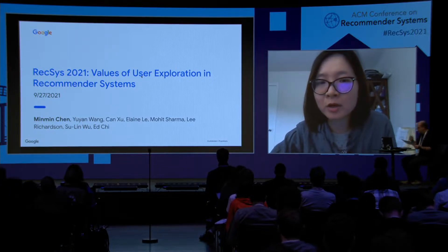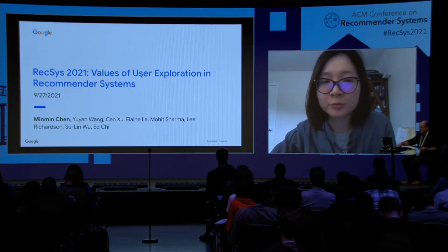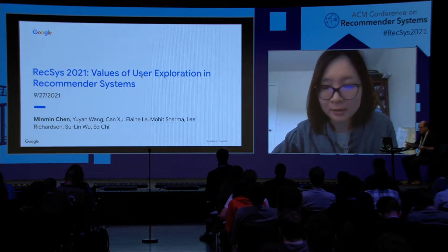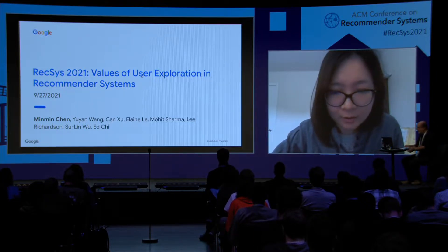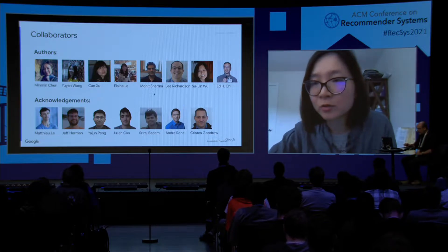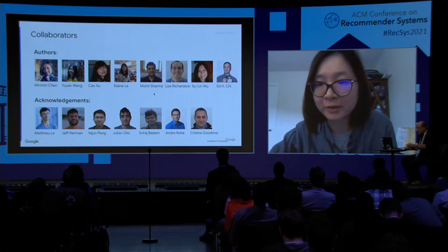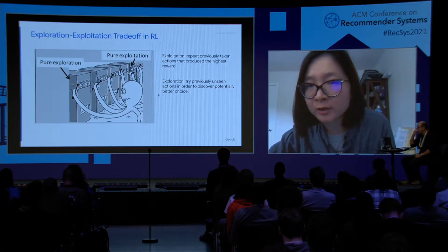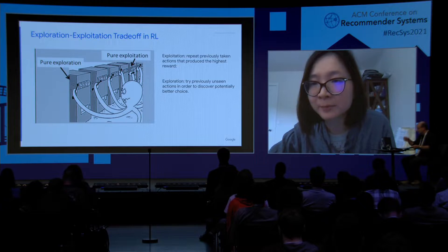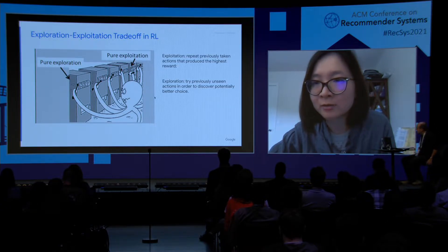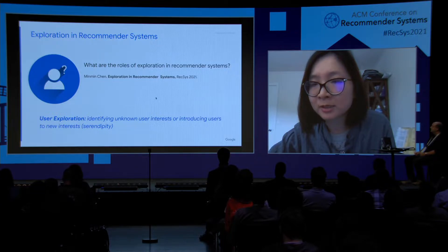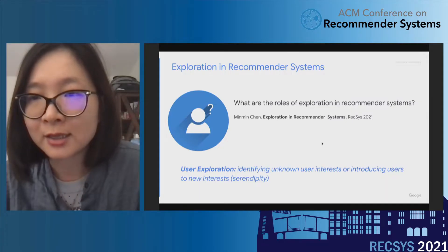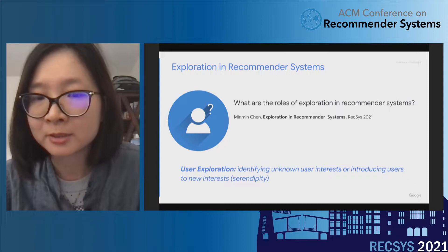So I'm here to present the work on understanding the values of user exploration in recommender systems. This is a joint work with many collaborators within Google. As the title suggests, this is a work on exploration. While exploration and exploitation have been extensively studied in RL, the roles of exploration in recommender systems is less clear, in our opinion. We actually have another work at this venue which focuses on disentangling the different roles exploration plays in recommender systems.